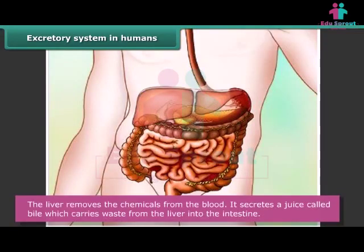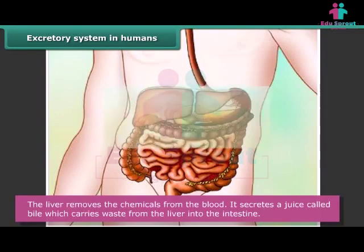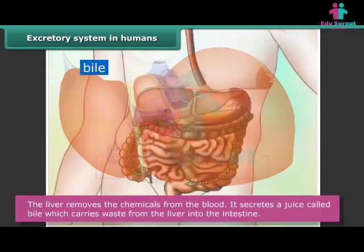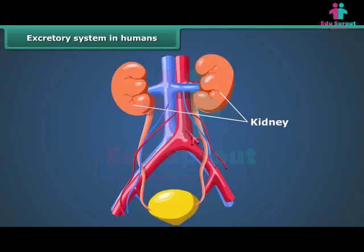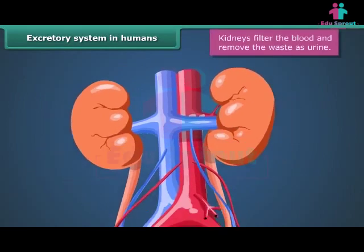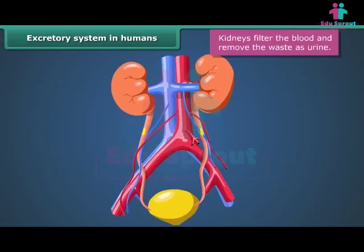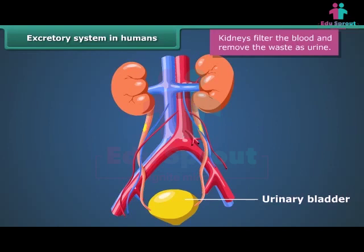The liver removes chemicals from the blood. It secretes a juice called bile, which carries waste from the liver into the intestine. Kidneys are bean-shaped and two in number. They filter blood coming from different parts of the body. During this process, useful substances are absorbed back into the blood and the waste is removed as urine. The urine goes into the urinary bladder through tube-like ureters, is stored there, and is passed out through the urinary opening at the end of a muscular tube called the urethra.